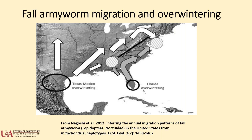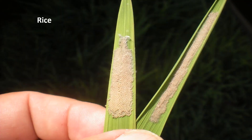In rice, we get fall armyworms almost every year to some degree, but most of the time it's really not that bad. This year they got into our rice crop in serious numbers. You can see in photos that pattern of where they came in from the tree line and wiped seedling rice out. A lot of times a little water in a levee will stop armyworms, but we were getting many calls from growers and consultants dealing with them in big numbers in late May and early June.